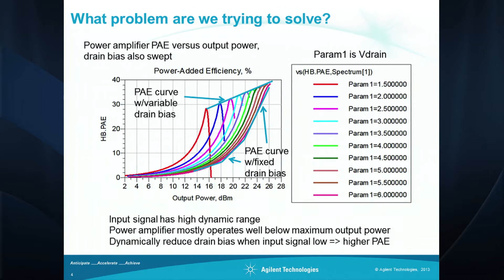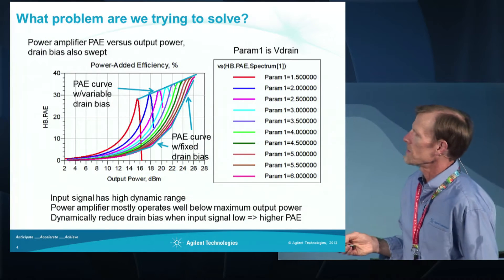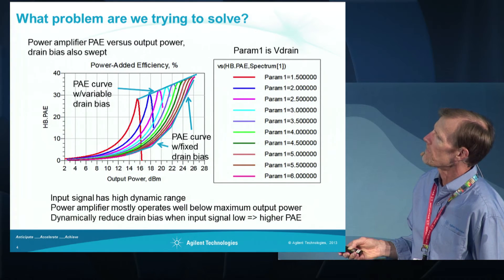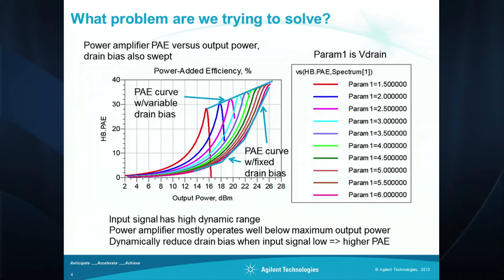This is a plot of the power added efficiency curve versus power delivered for a power amplifier with the drain bias swept as a parameter — from one and a half up to six volts. What this indicates is that if we have a fixed drain bias, that's the lowest curve. But if we could adjust the drain bias to lower levels as the input signal power level is lower, then we can operate along the higher curve and get higher power added efficiency.